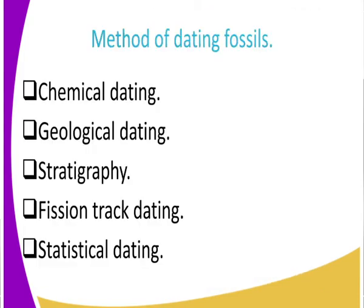Let us look at the methods of dating fossils — how archaeologists determine the age of a fossil. The methods include: chemical dating, geological dating, stratigraphy, fission track dating, and statistical dating. We will look at all these methods in greater detail when we discuss dating methods comprehensively.